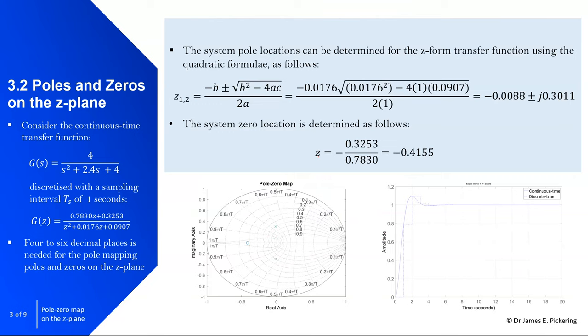We can locate the poles and zeros on the Z-plane. Starting from the continuous time transfer function we just saw, we discretise it with a sample interval of 1 second — refer back to the discrete time system modelling video if needed. This gives us the transfer function G(z). Typically we work to 4 to 6 decimal places for poles and zeros on the Z-plane, though simulation may require many more.